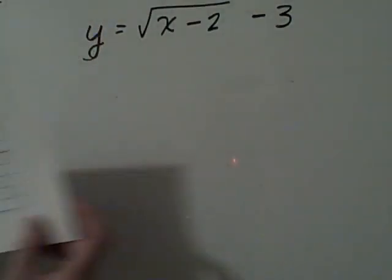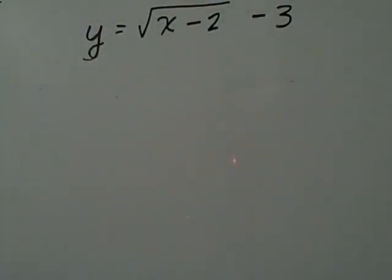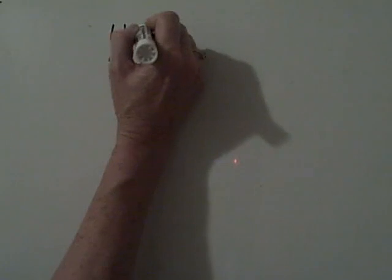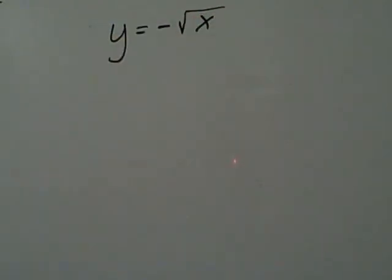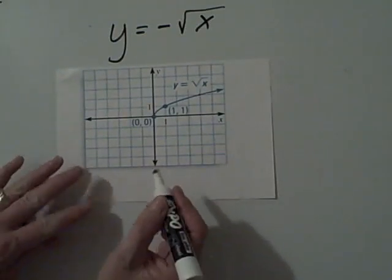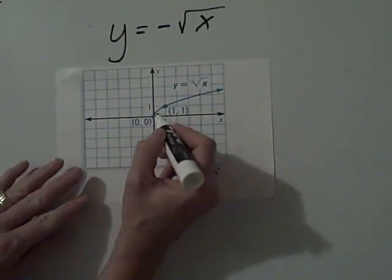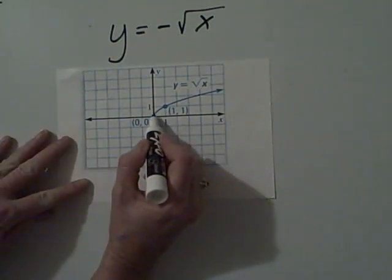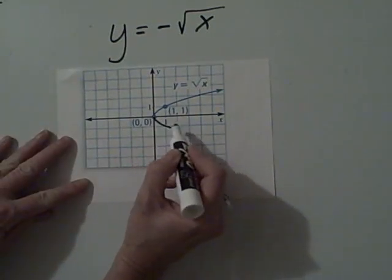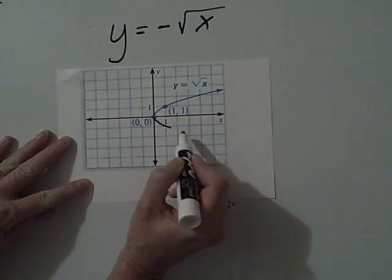Now you might wonder what happens if we have a negative in front. Y equals negative square root of x. Well this was our original equation. And if it's a negative square root of x, if you remember when we had a negative absolute value, all that simply does is flip the value to the other side.